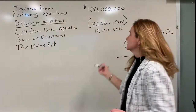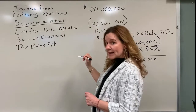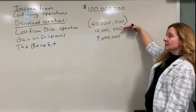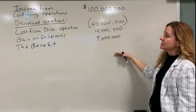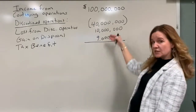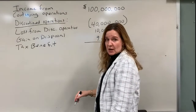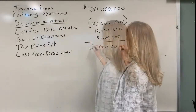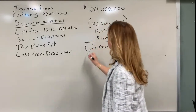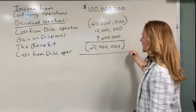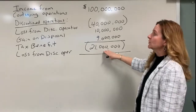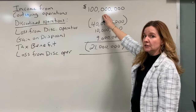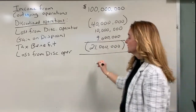The tax benefit goes in as a positive number; a tax expense would be negative. Adding up the negative $40 million, plus the $10 million gain on disposal, plus the $9 million tax benefit gives a loss from discontinued operations of $21 million. Then the bottom line is net income: combining the $21 million loss with income from continuing operations of $100 million gives net income of $79 million.